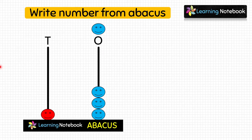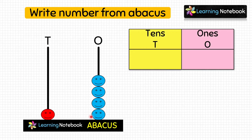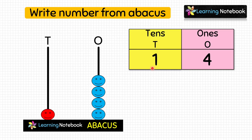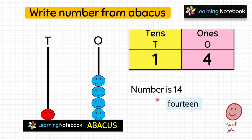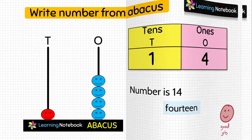Now students, can you tell me the number being shown in this abacus? First let's count the beads at the ones place: 1, 2, 3, 4. So write 4 at the ones place. Then count the beads at the tens place — there is only one bead, so we write 1 at the tens place. We have got the number 14. This abacus is showing the number 14.